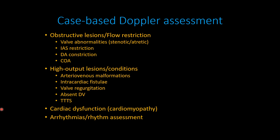Now we perform a case-based evaluation with Doppler, using the same components just described but tailored to focus on certain anatomy based on the lesion type. With obstructive lesions, we focus more attention on the valves, interatrial restriction in cases like hypoplastic left or right heart, ductus constriction, and coarctation. With high-output lesions, we calculate cardiac outputs and velocities. Cardiac dysfunction, arrhythmias, and rhythm assessment are also part of this targeted evaluation.